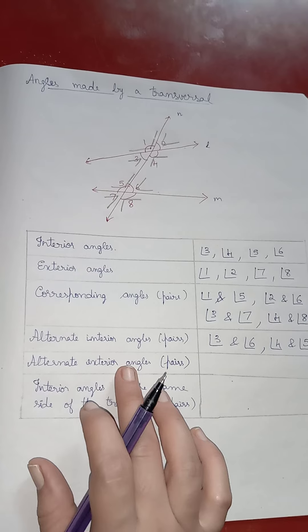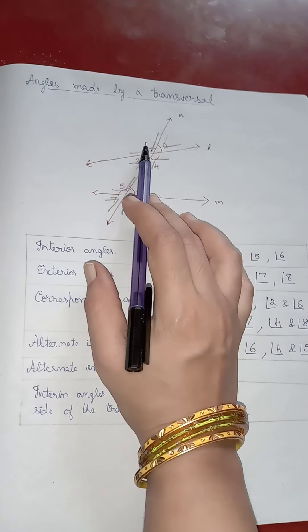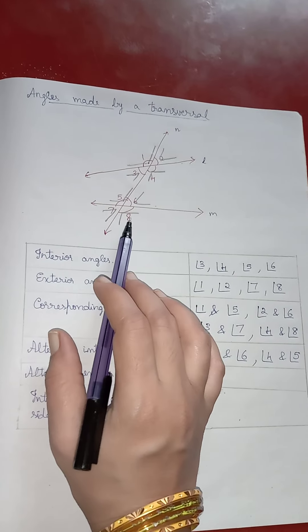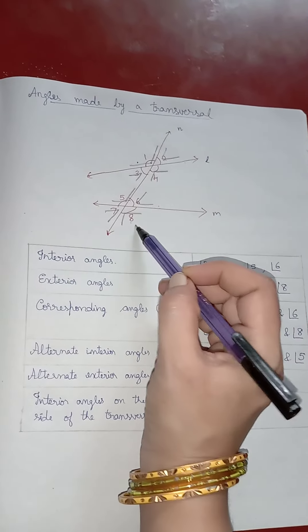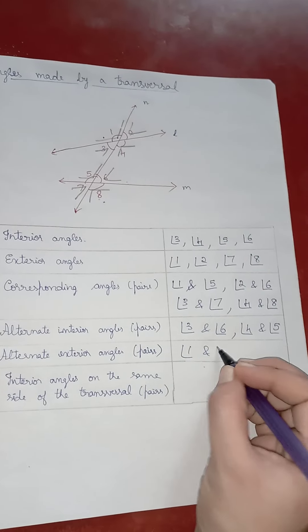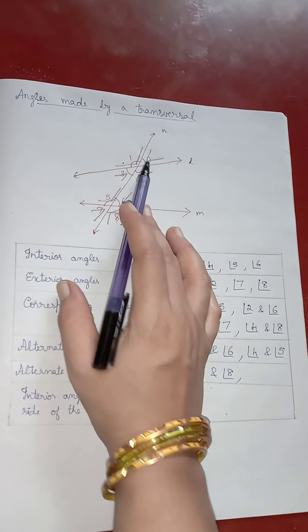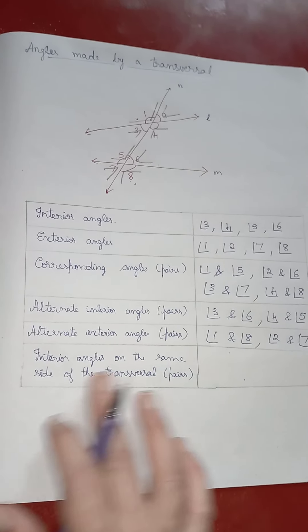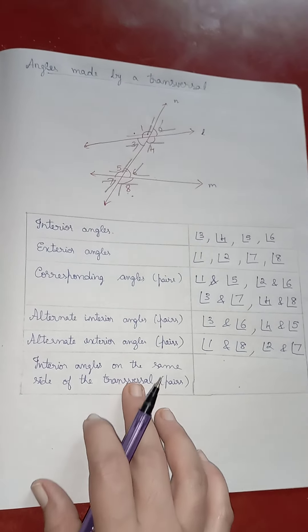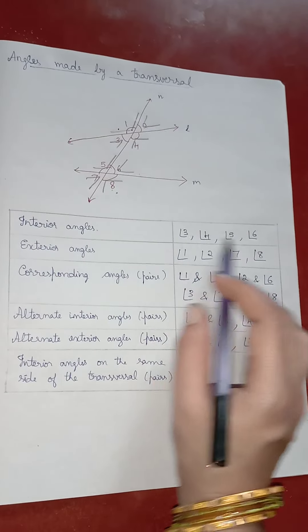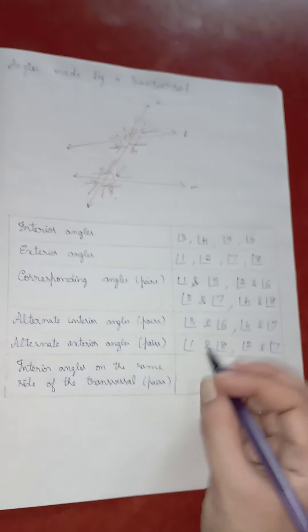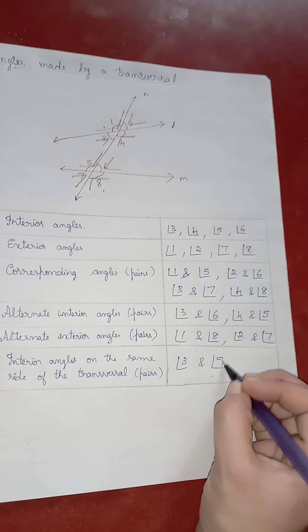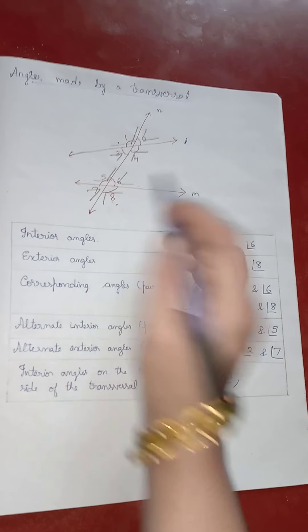Now, what are alternate exterior angles? The exterior angles are 1, 2, 7, and 8. Alternate means they must lie on either side of the transversal. So angle 1 and angle 8 form one pair, and angle 2 and angle 7 form the second pair. For interior angles on the same side of the transversal: angle 3 and angle 5 are on the same side, and angle 4 and angle 6 are on the right side.